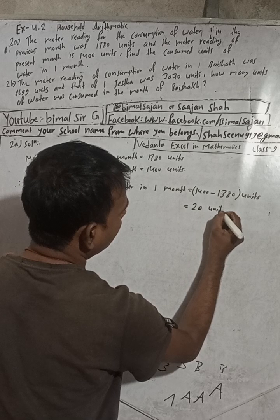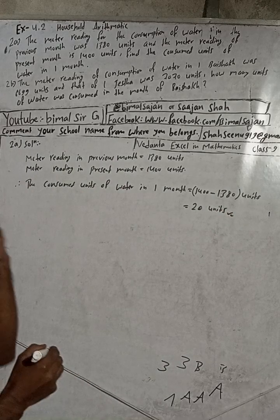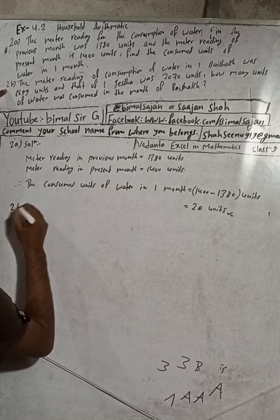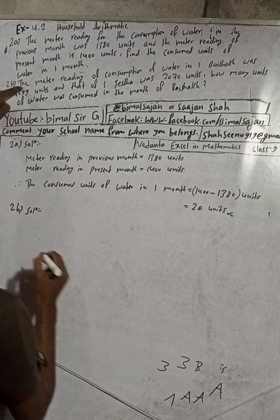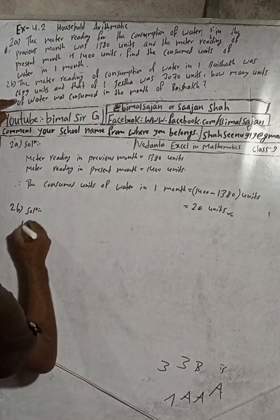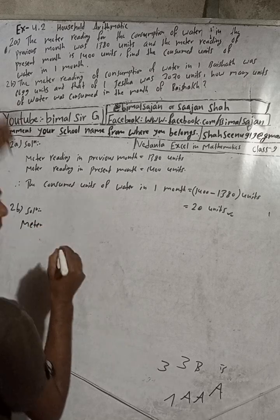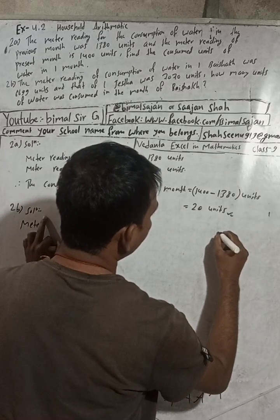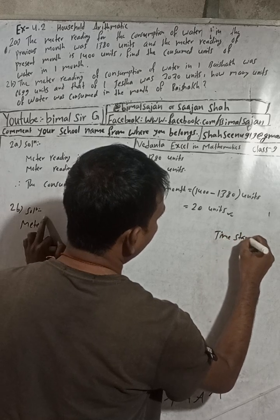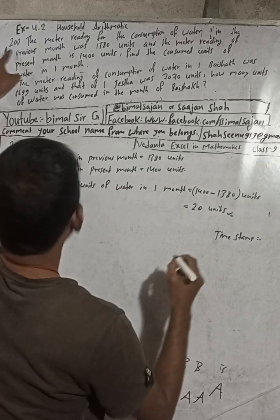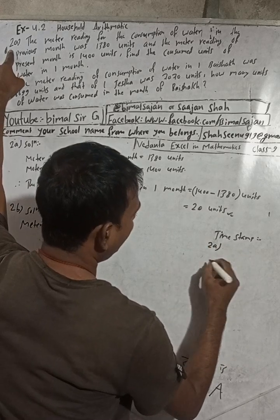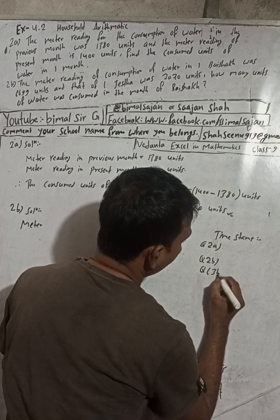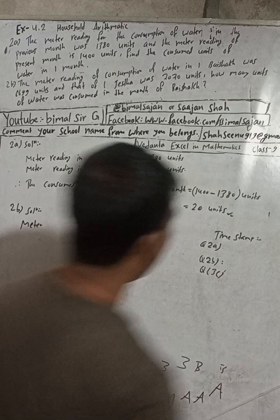Okay, now I will take two minutes. This is the answer of question 2a. Now I will provide the time stamp for question 2a, then question 2b, and then question 3b. The time stamp for question 2b will be here. The time stamp for this question is 3 minutes and 25 seconds.